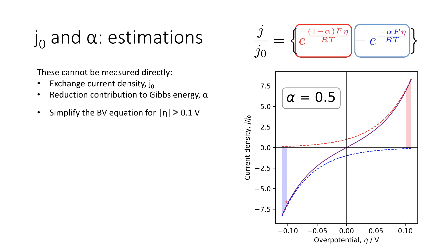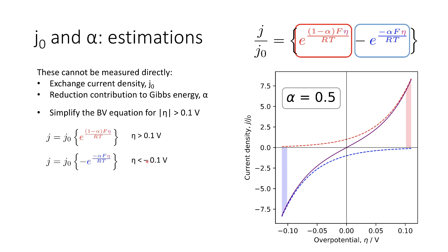At extreme values of overpotential, reduction dominates at very low overpotentials and oxidation dominates at very high overpotentials. When eta is greater than plus 0.1 volts, the reductive term simply shrinks to zero and we get a very simple format for our overall current density. On the other hand, when eta is less than minus 0.1 volts, the oxidative term shrinks into obscurity and we get a simple expression in terms of the reductive process.